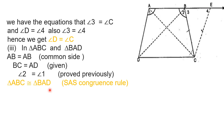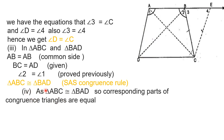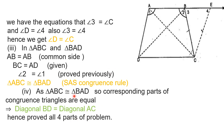For the fourth part, we have to prove diagonal AC equals diagonal BD. From the third part, triangle ABC is congruent to triangle BAD. By the corresponding parts of congruent triangles, the corresponding parts BD and AC are equal. So we can say diagonals BD and AC are equal. Hence, all four parts of this problem are proved.